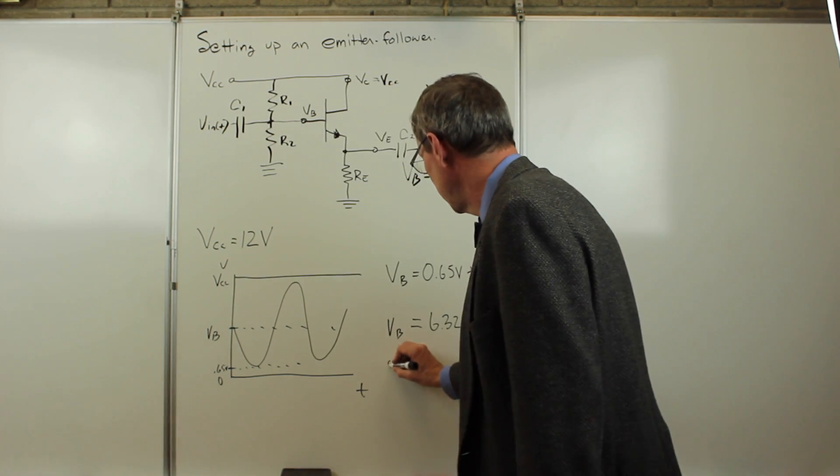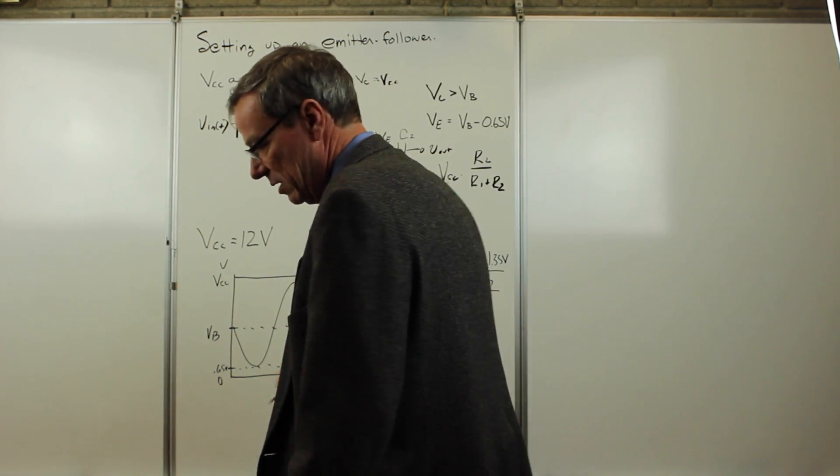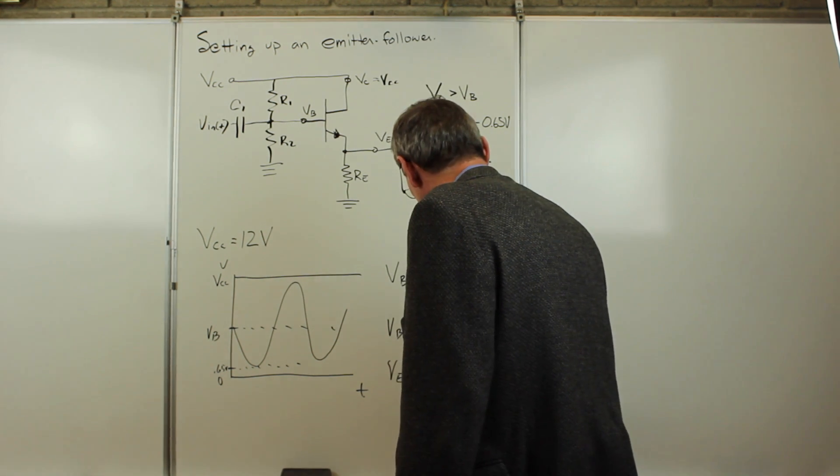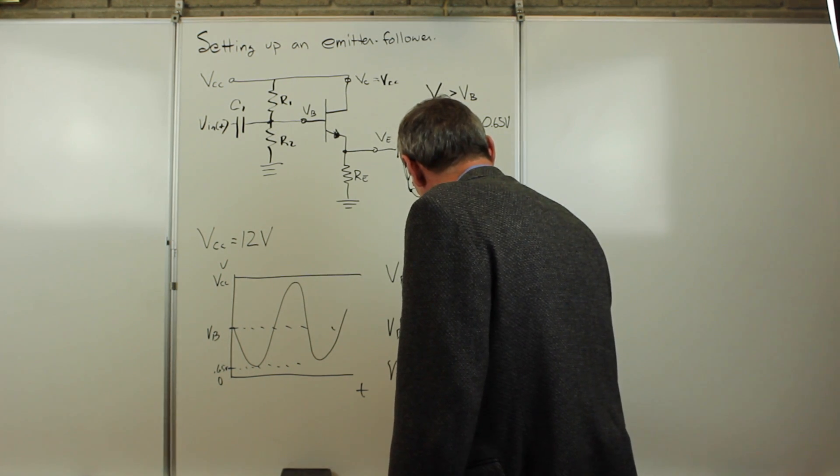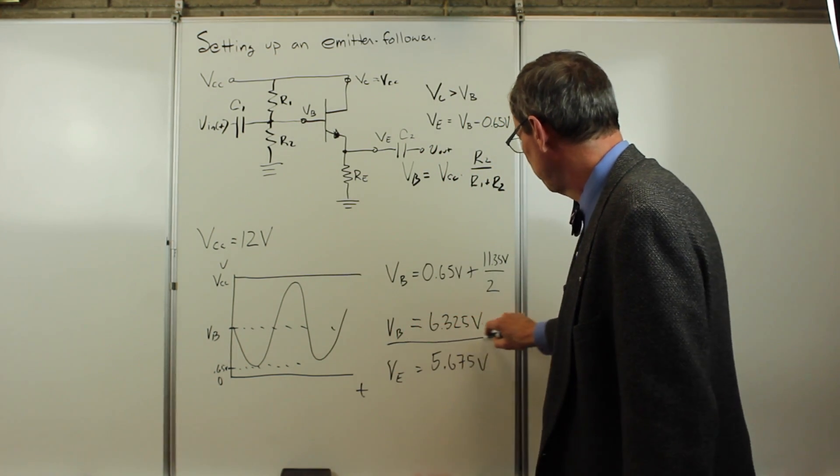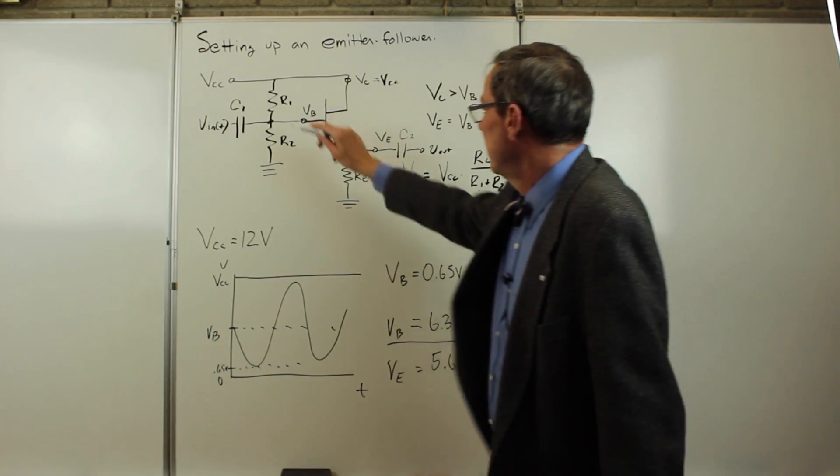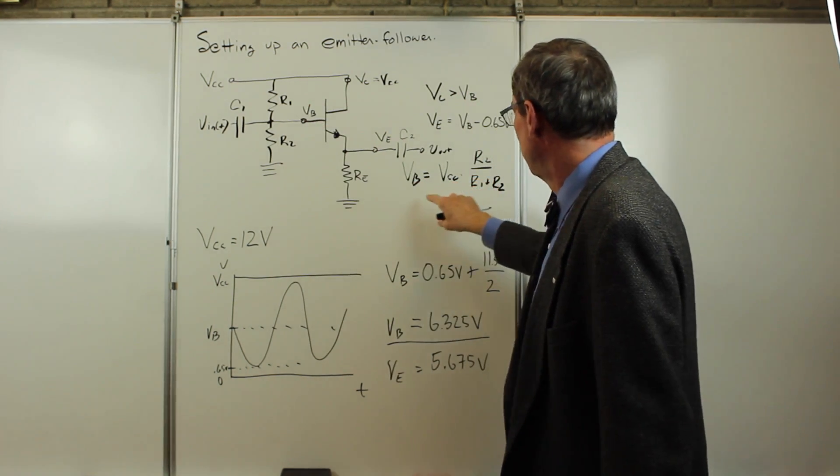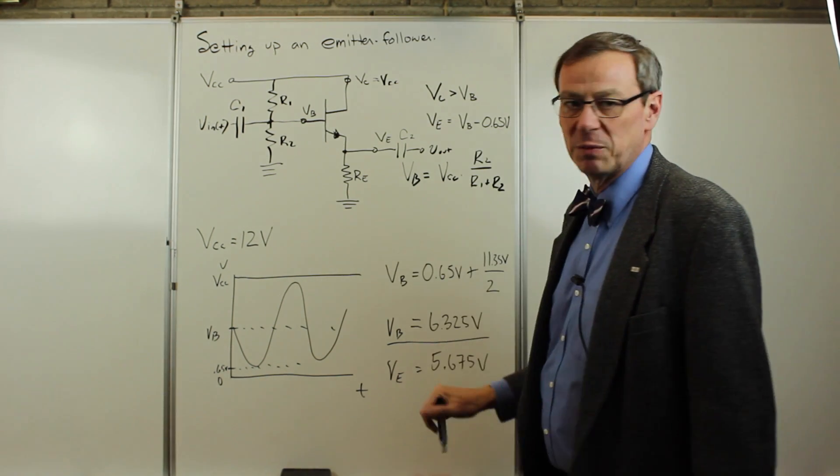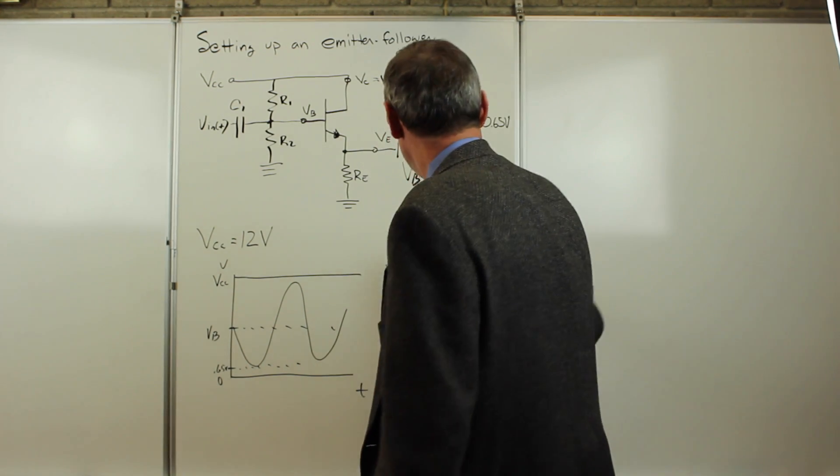If we do that, the emitter voltage is going to be one diode drop below that, so it's going to be 5.675 volts. So that's what we'd like to do. Now the challenge is to pick two resistors R1 and R2 that will give us a divider that gives us, with 12 volt input, 6.325 volts output.